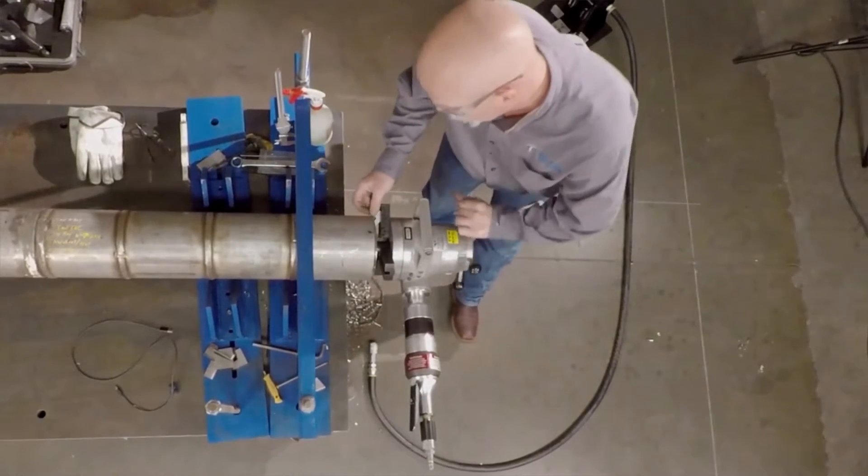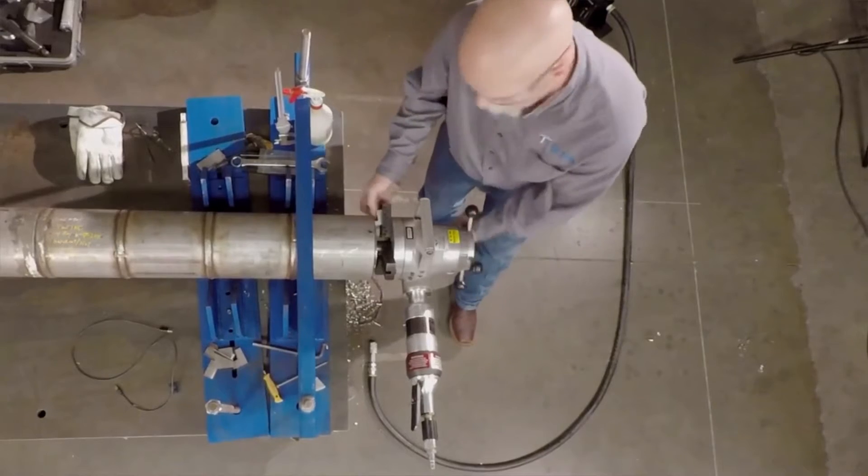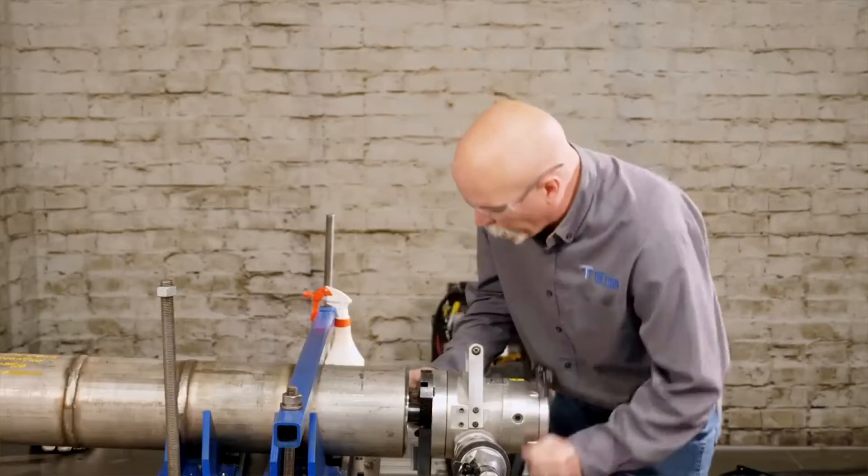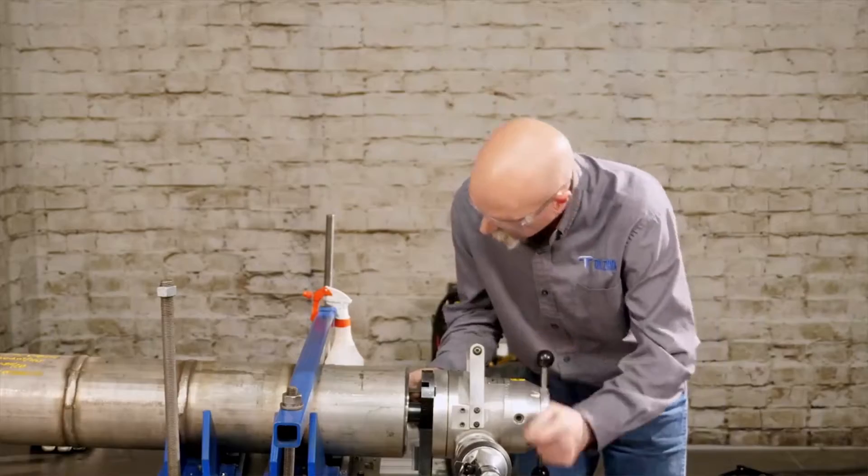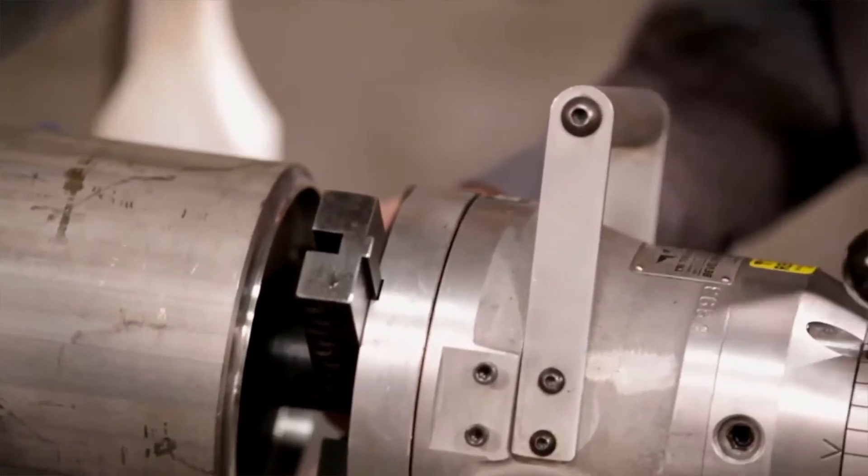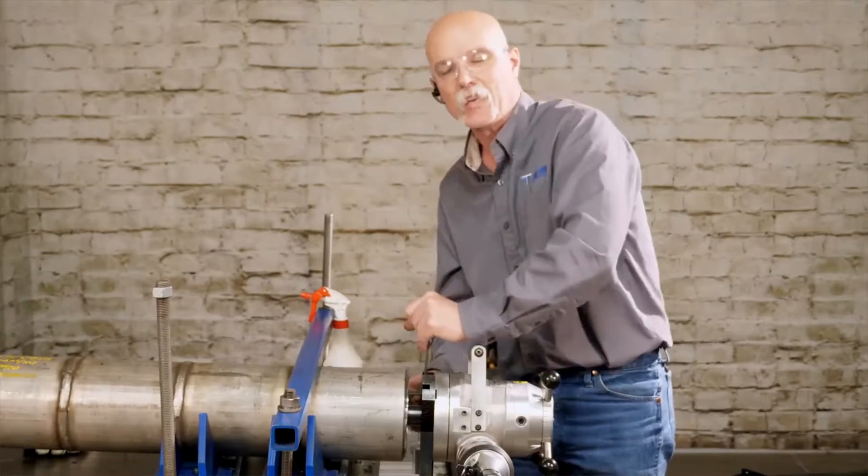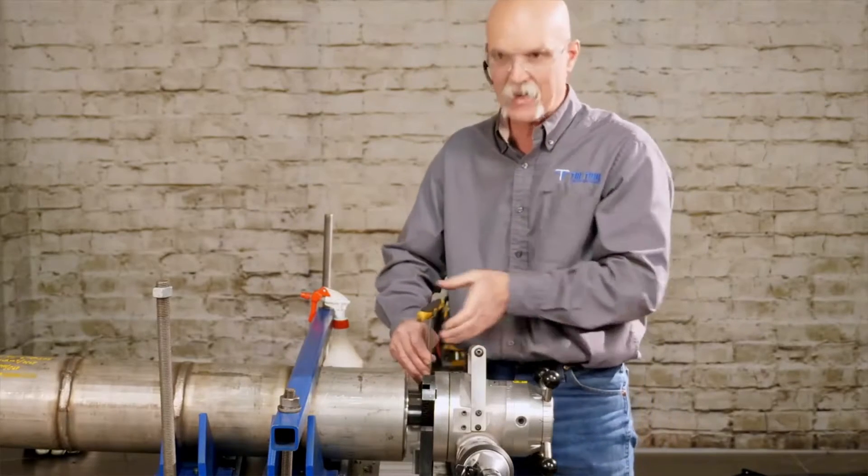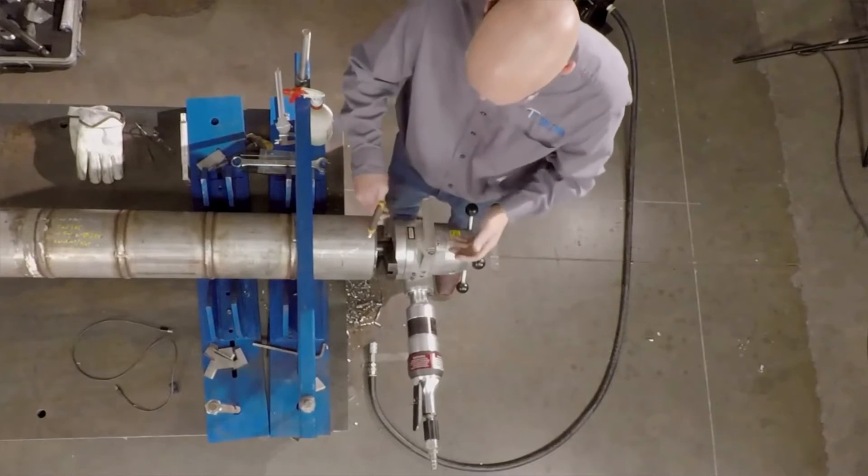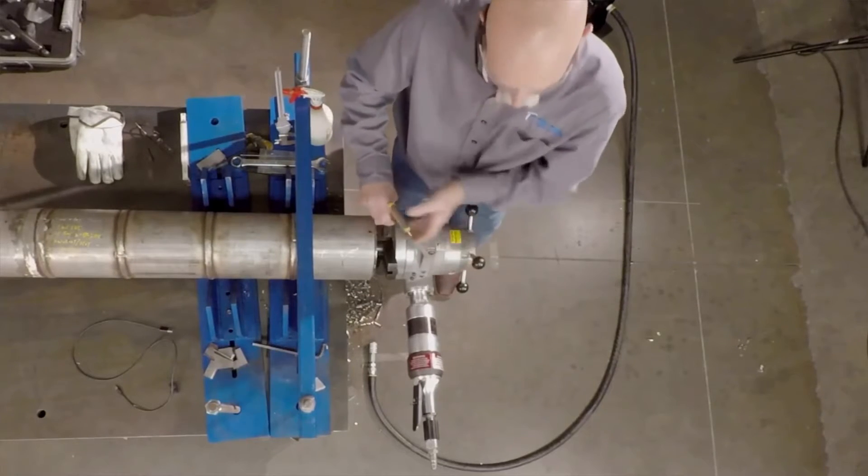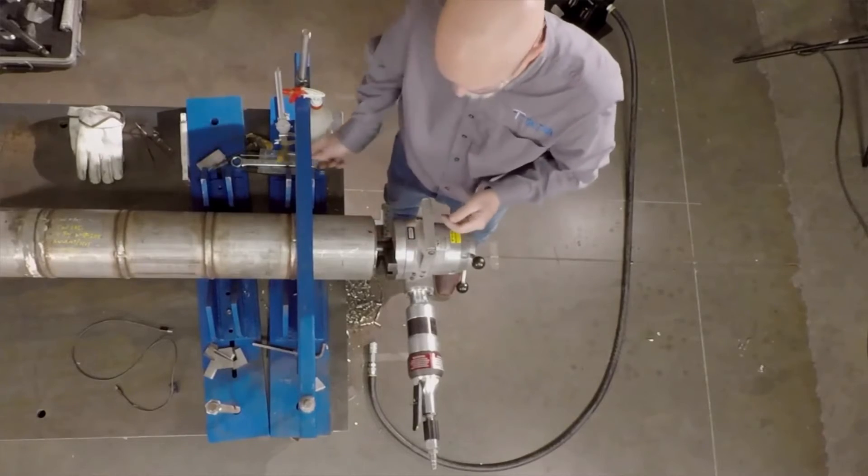You've got to have a counterbore cleaned up all the way around the pipe, preferably hitting a target dimension to get a consistent land. For a J prep, the only other way to get a consistent land is if you use an attachment we make that's an ID tracker. So if you don't clean up all the way around on your ID, you can't get a consistent land unless you track it.